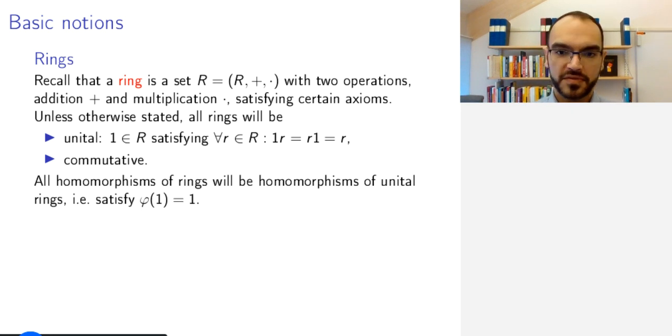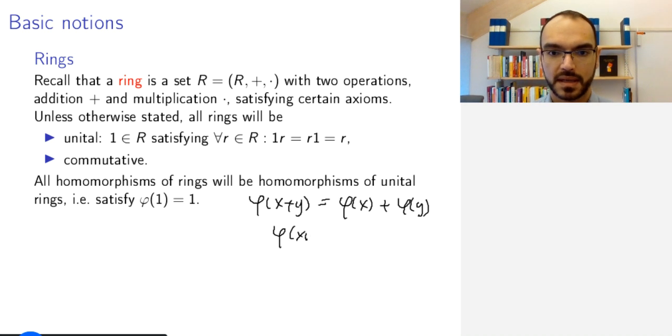And when we look at homomorphisms of rings we will require them to respect unity. Remember a homomorphism of rings is already required to be compatible with addition and multiplication, and now we also require it to be unital. For those of you who want to view this from a category point of view, we will be working in the category of unital rings where the morphisms are morphisms of unital rings.